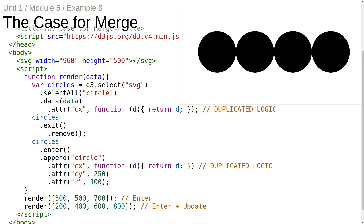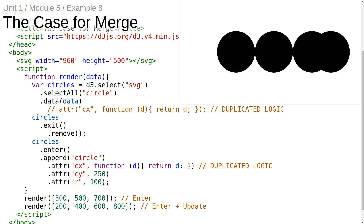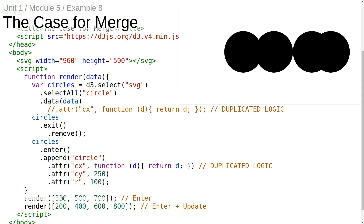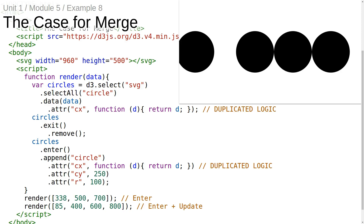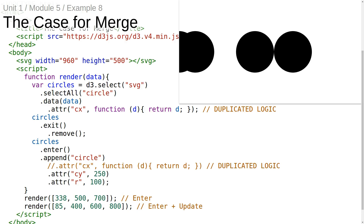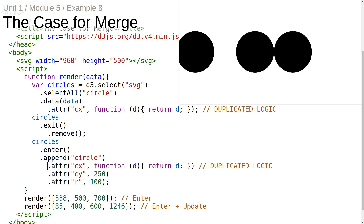But there is a slight problem here, and that is the problem of duplicated logic. Notice that we're assigning the CX attribute in the update selection, and we're also assigning the CX attribute in the same way in the enter selection. We actually need both of these — if we don't set CX in the update selection, then the CX values for the first circles are derived from the first invocation, not the second. And if we don't set CX in the enter selection, the newly appended circles won't have any CX value defined. So we need to set CX in both selections, but ideally it shouldn't appear in two places in the code.